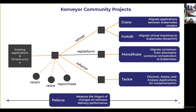This is completely aligned with the 6R framework — re-host, re-platform, re-factor, retire, retain, and repurchase — that everybody is using right now to modernize their workloads. We want to align all these tools to all these cases: whenever you want to re-host, you could use Crane or Forklift; to re-platform, use Move to Kube; and to re-factor, use Tackle. Today we're going to see Crane and Forklift, which John and Fabien will demonstrate.